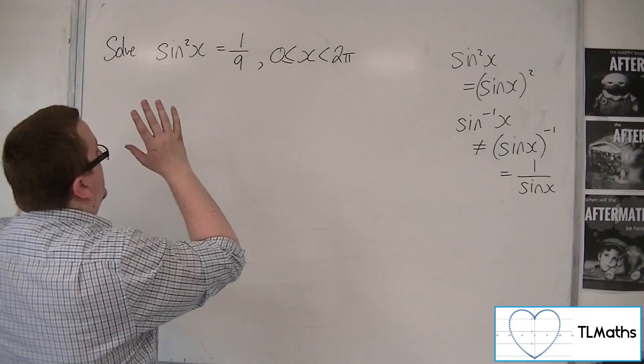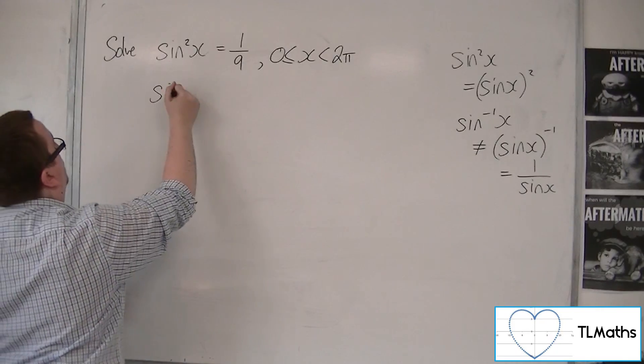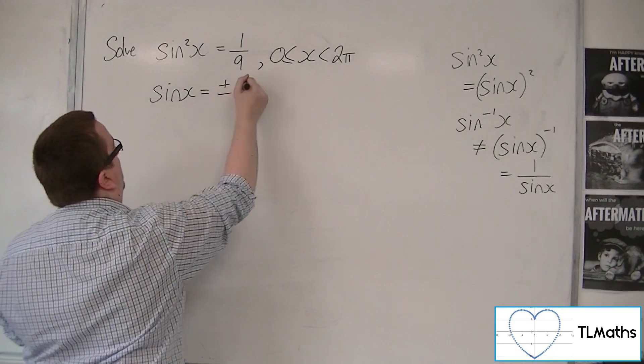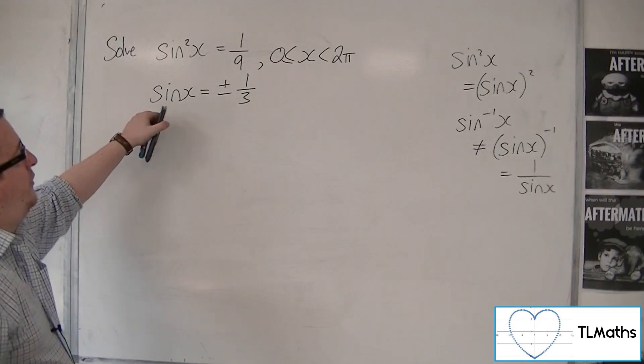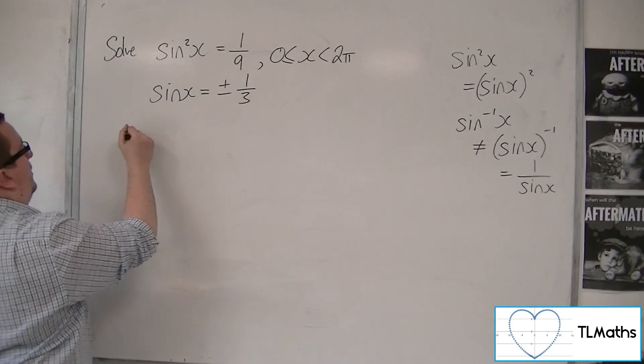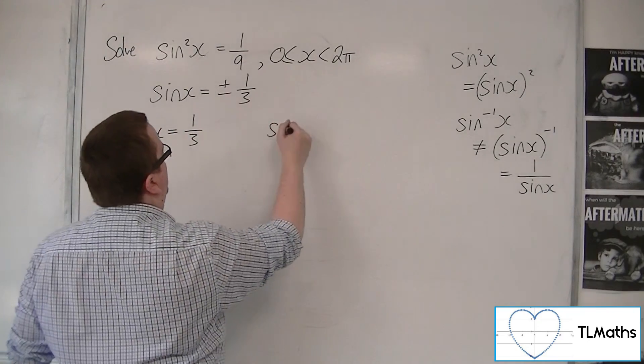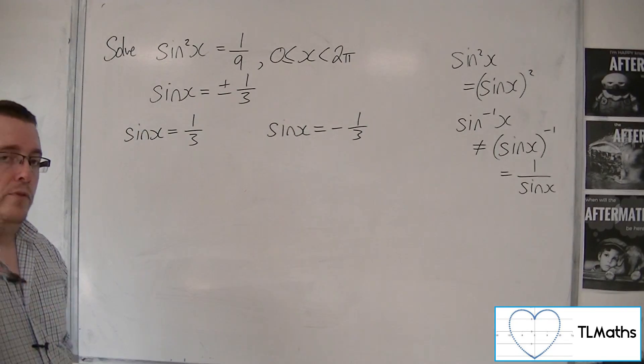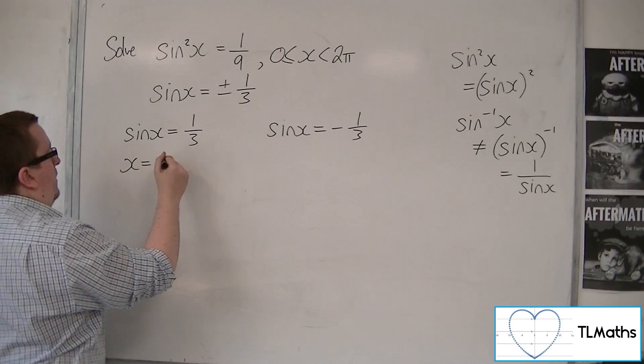So we're going to square root both sides. So what's going to happen when I square root 1/9 is I'm going to get plus or minus 1/3. So I'm actually solving here two separate equations: sinx is positive 1/3 and sinx is negative 1/3. So that means I have to inverse sine 1/3.